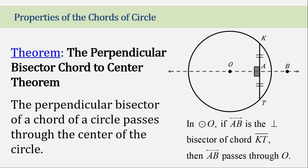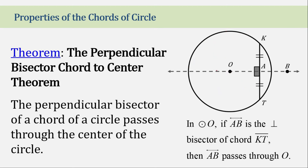The third theorem is the Perpendicular Bisector Chord to Center Theorem: the perpendicular bisector of a chord of a circle passes through the center of the circle. In circle O, if line AB is the perpendicular bisector of chord KT, then this line will always pass through the center. Similarly, the perpendicular bisector of any other chord will also pass through the center.